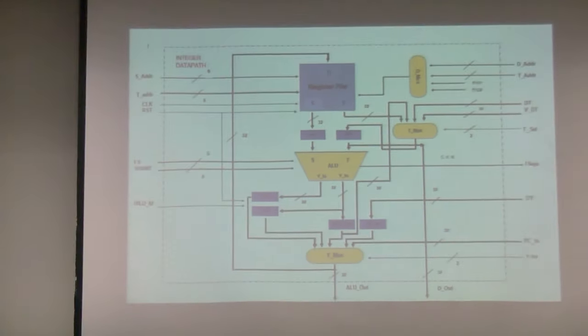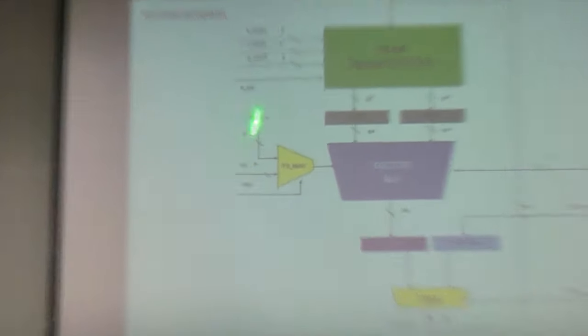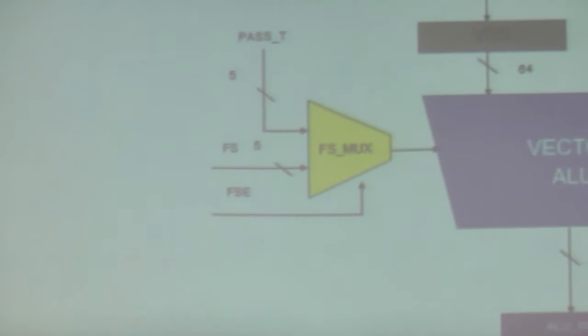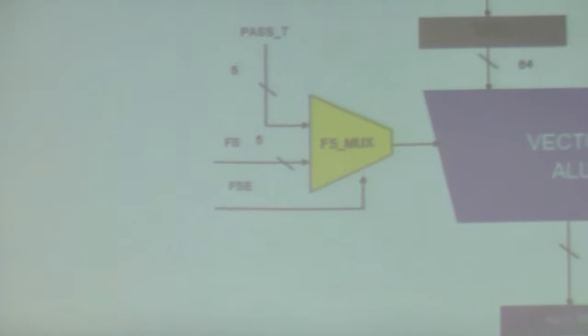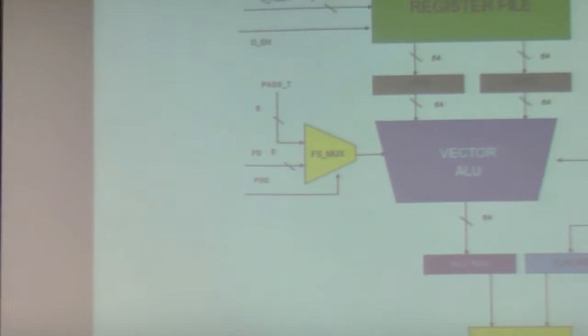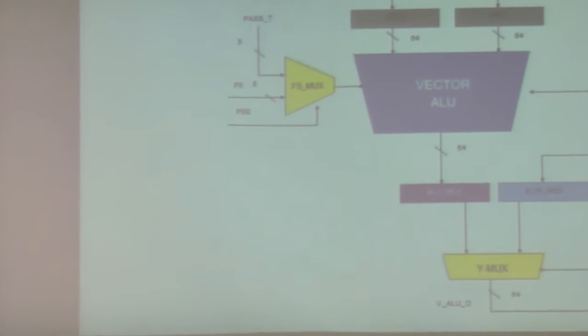This is our vector data path. It has a 64-bit register file with the same RS, RT, and RD. It has the same function select, but this one has a function select mux with an enable coming from our MCU. The default passes T through to simplify load word and store word — and double store word in particular. Then we have ALU reg and DN reg for the double load word, with a path back to the register file.